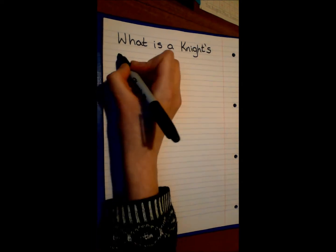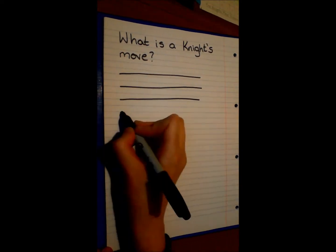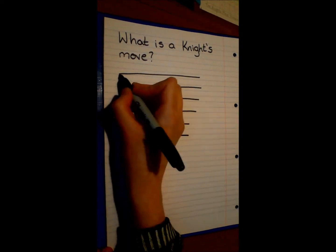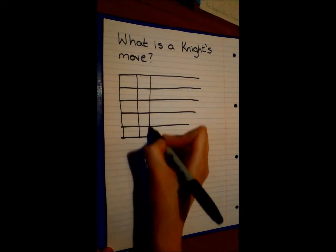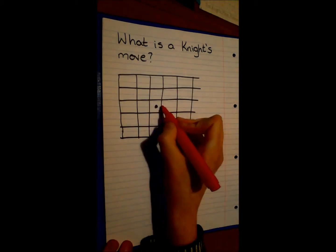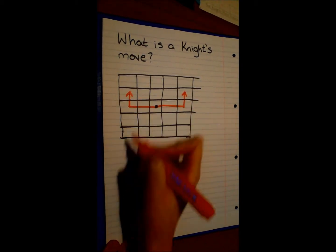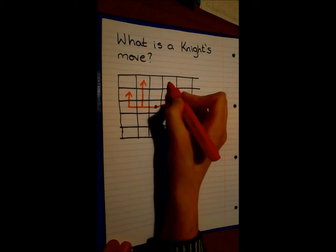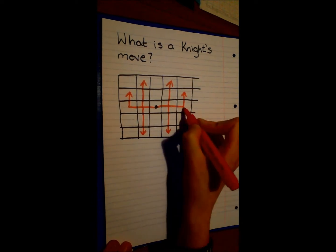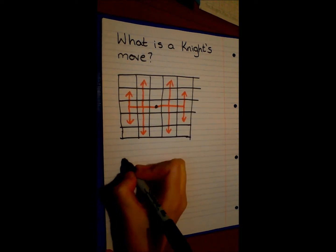To understand this problem we first need to know what a Knight's move is. On a chessboard a Knight can move two spaces in one direction then one space in a perpendicular direction, or vice versa.